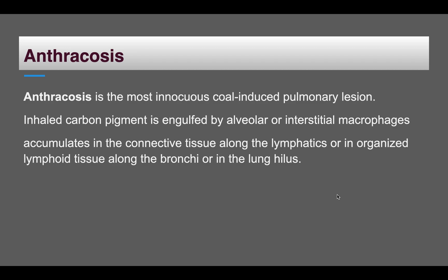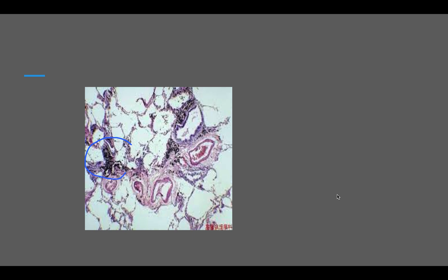Anthracosis is the most harmless form of coal-induced pulmonary lesion and is also seen in normal persons exposed to air pollution or carbon inhalation from smoking. The inhaled carbon particle is engulfed by alveolar or interstitial macrophages and accumulates in connective tissue near the bronchi or lung hilum. There is carbon pigmentation along the lymphatics but no fibrosis at all.